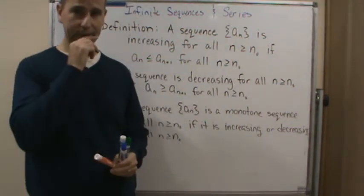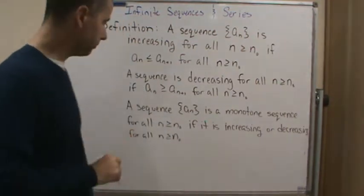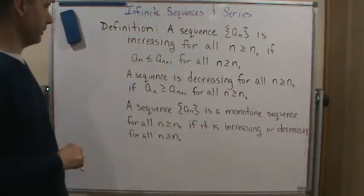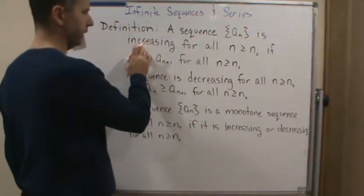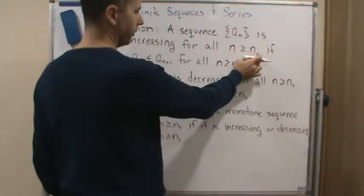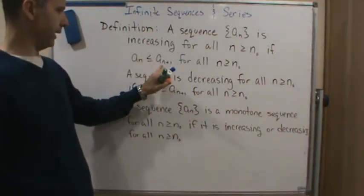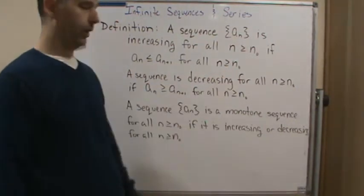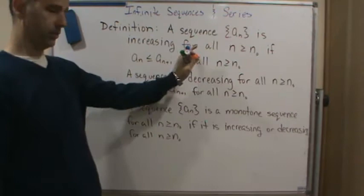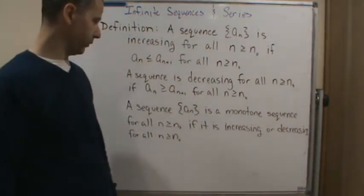Okay, so welcome back. Now we introduce the definition of a monotone sequence. A sequence a sub n is increasing for all n greater than some n naught if a sub n is less than or equal to a sub n plus 1 for all n greater than or equal to n naught. This is going back to the increasing or eventually increasing that we were talking about earlier.